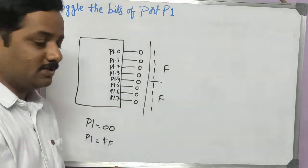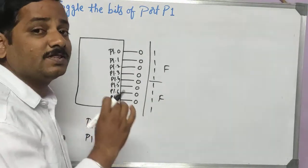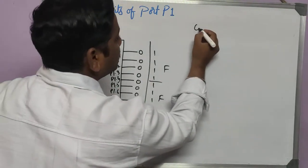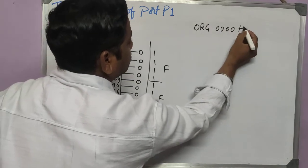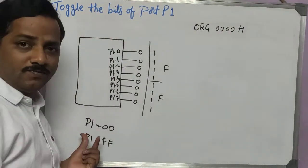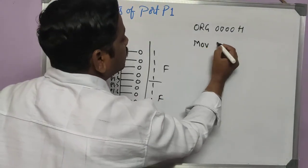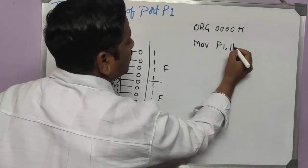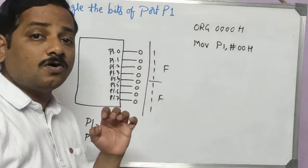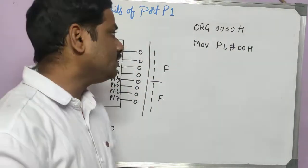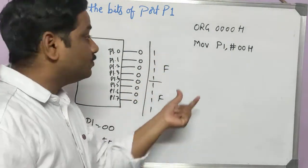To do that, let's see how to write the code. Just move 00H to P1 and then move FFH to P1 with some delay in between. I will start with origin 0000H, then using the MOV instruction: MOV P1, #00H. So first I will assign 00H to all the bits of port 1, and then immediately assign FFH to port 1.